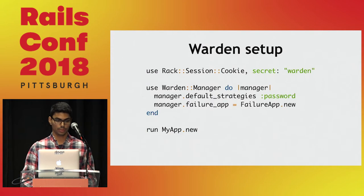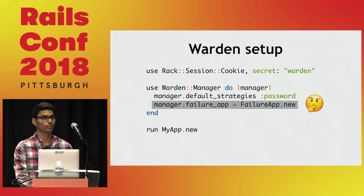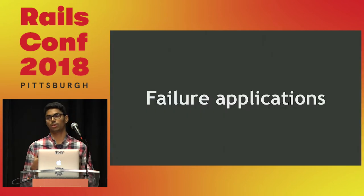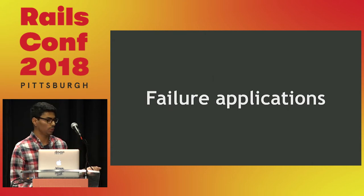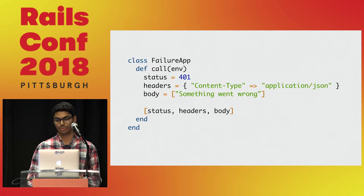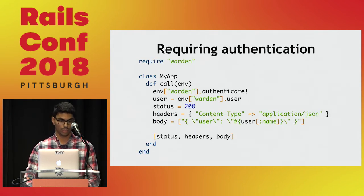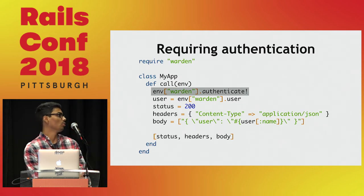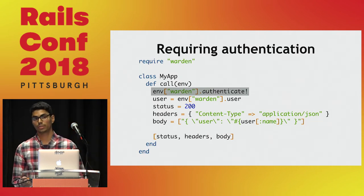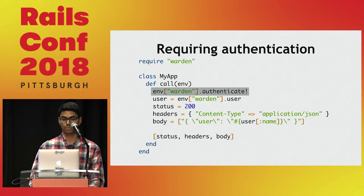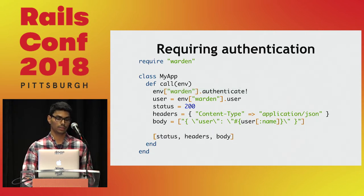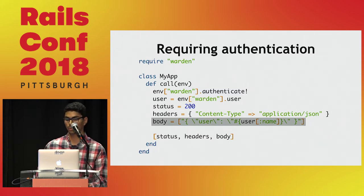Back to our setup, the failure_app setting is a regular Rack application that Warden calls when authentication fails — here we're just returning 401 with 'something went wrong' in the body. Our setup is now complete. We can call authenticate! — the bang version, which throws a failure if authentication fails so our failure app gets called. Then we grab the user from the session by calling the user method, and in the body we return the user's name to make sure it's working.